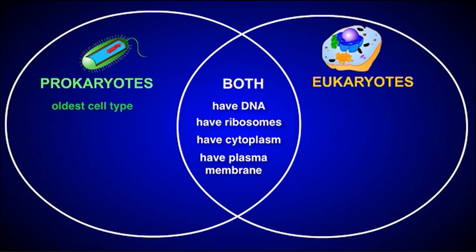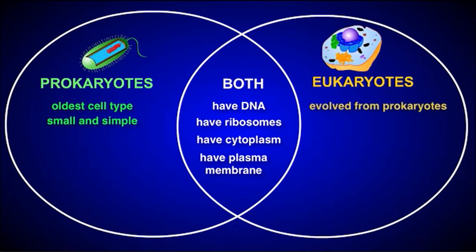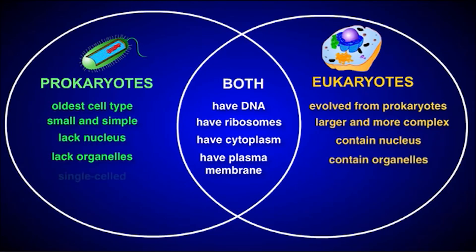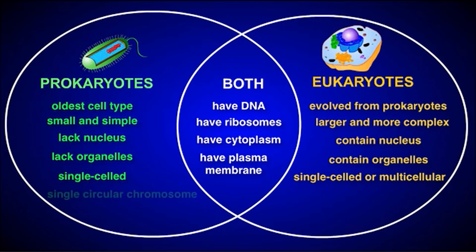Prokaryotic cells are the oldest type of cell — small and relatively simple. Eukaryotic cells evolved from prokaryotic cells later and are larger and more complex. Prokaryotes lack a nucleus and membrane-bound organelles; eukaryotes have both. Prokaryotes are single-celled, while eukaryotes can be single-celled or multicellular. Finally, prokaryote DNA is organized as a single circular chromosome, while eukaryote DNA is organized as linear chromosomes.